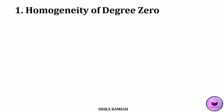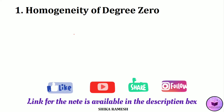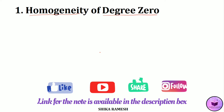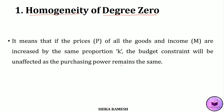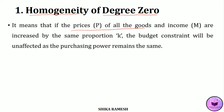The first property of the Indirect Utility Function is that it is a homogeneous function of degree 0. This means that if the prices of all goods and the consumer's income are increased by the same proportion, say by K, then the budget constraint will be unaffected.